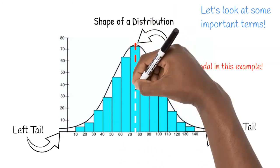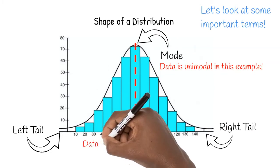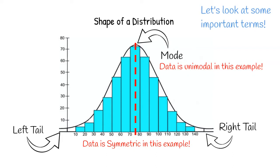If a line can go through the center of our display, making the left side a mirror image of the right side, our data is said to be symmetric. Now we know enough to start using these terms.